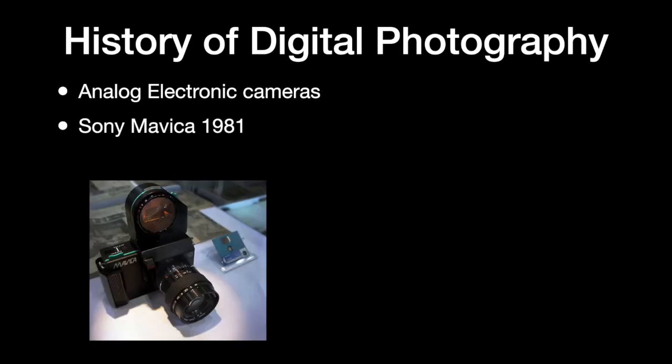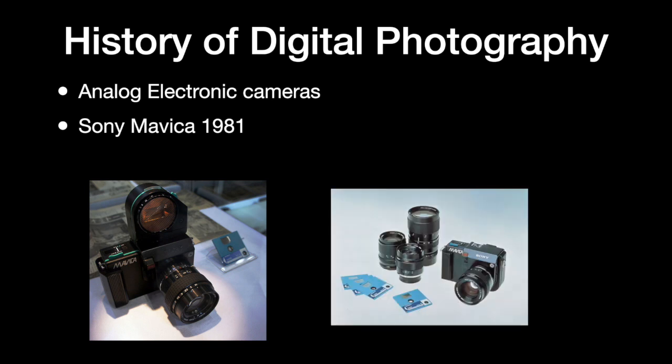Eventually there were analog electric cameras. Sony made a camera called the Mavica — it used floppy disks — but it wasn't truly digital in that it was really a video camera that took stills. So it wasn't digital as we sort of know it. The Mavica had interchangeable lenses and things like that.